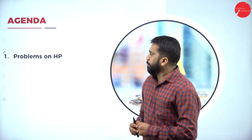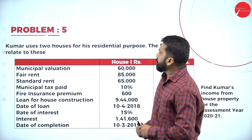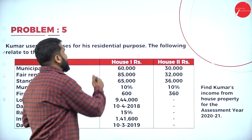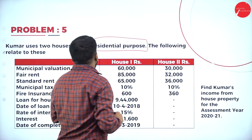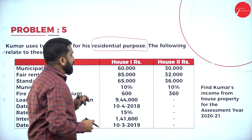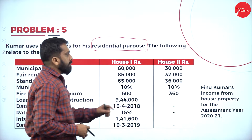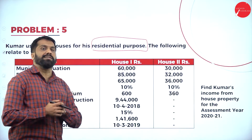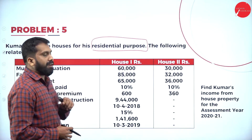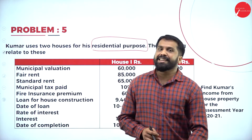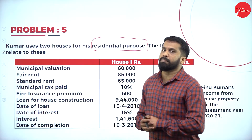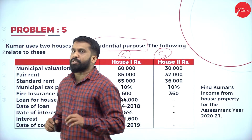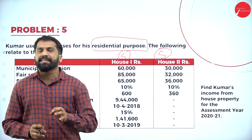Problem number five: Kumar uses houses for his residential purpose. From the given information, find Kumar's income from house property for the assessment year 2020–2021. They have clearly mentioned it is used for his residential purpose, which means it is self-occupied.